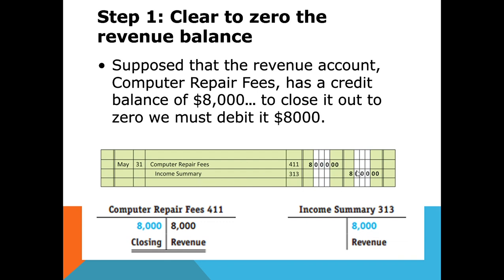Looking at the T-account, we started with a credit balance of $8,000 in computer repair fees. To zero it out, we debited it — now the balance is zero. Per the rules of journalizing, if you have a debit you must have a credit, so that $8,000 is credited to income summary. On the income summary T-account, we now have a credit of $8,000 from step one.